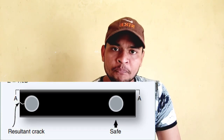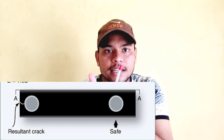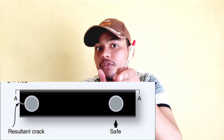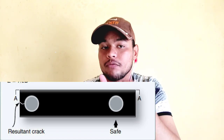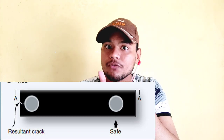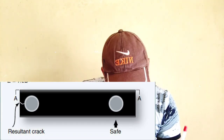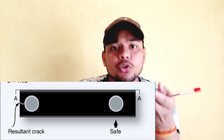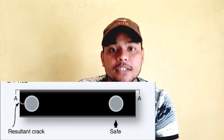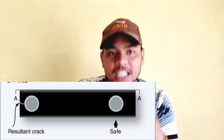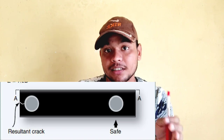Next is edge distance. Edge distance is the distance of the rivet from the edge of the sheet on which you are riveting — also called the margin. The minimum is 2D and the maximum is 4D, but the recommended value is two and a half times the diameter (2.5D). Keeping it at 2.5D is considered good practice.